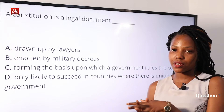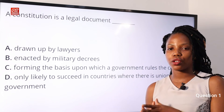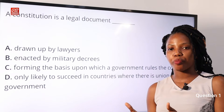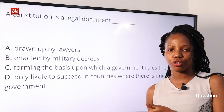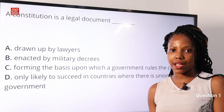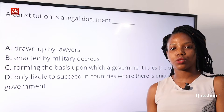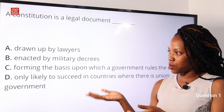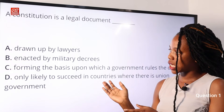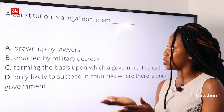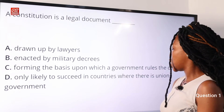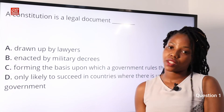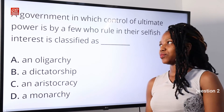This question simply asks what a constitution is. A constitution is defined as a body of rules and principles stating how the powers of governing a country are given and how these powers should be exercised. It sets limits not only to the actions of the people but also to the actions of the government. Option C is the correct answer — a constitution is a legal document forming the basis upon which a government rules the country.